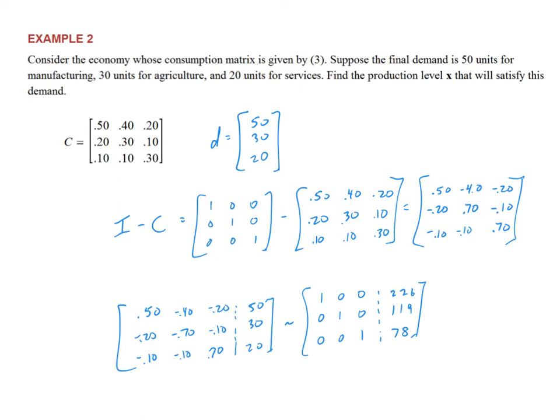So the interpretation of that is in order to produce 50 units of manufacturing to meet the demand of my economy, I need to create 226 units of manufacturing. In order to produce 30 units of agriculture, I need 119 units of agriculture. In order to produce 20 units of services, I need to create 78 units of services. That's how that works.